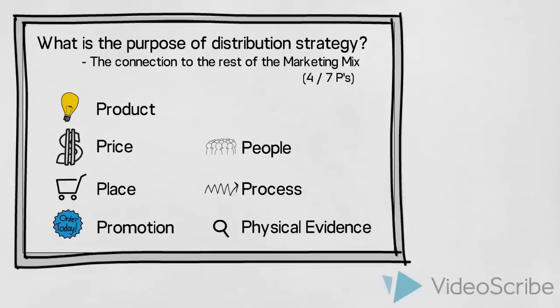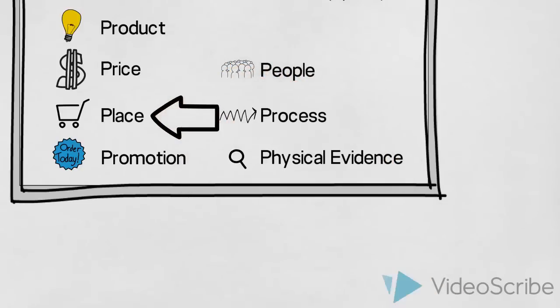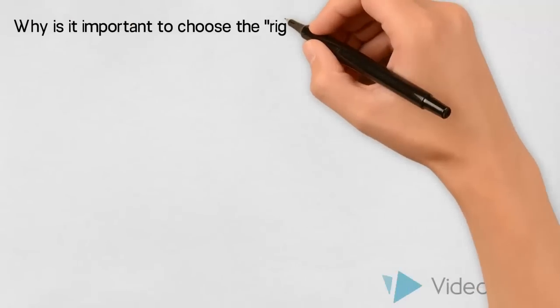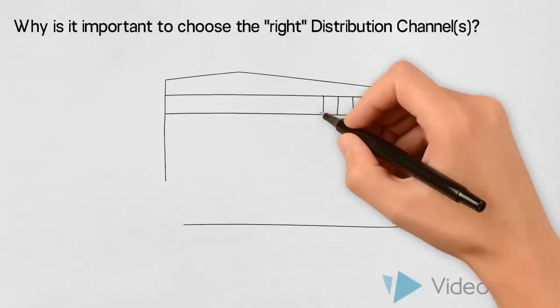None of the 4 or 7 P's should be decided on in isolation. However, place is the P which we will focus on in this video. So, why is it important to make sure we choose the right distribution channels? Let us use an example.